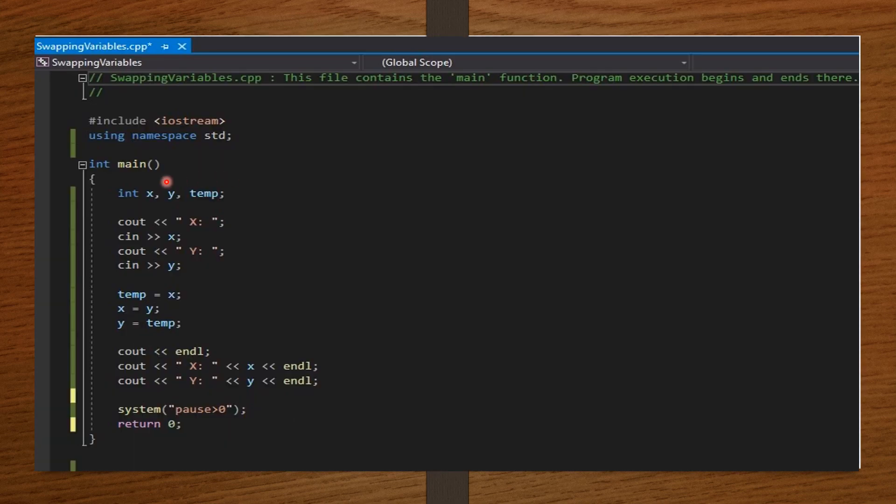In our main function, we declare x, y, and temp to hold integer values. Then, we ask the computer to display x colon. We say cout x colon in quotation marks, meaning x colon here is a string. Then next, we ask the user to input the integer value of x.